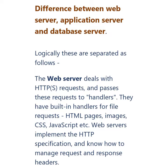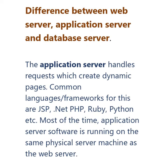Basically, web server deals with HTTP requests, whereas application server is a software which handles the dynamic pages. It can be built using languages or frameworks like JSP, .NET, PHP, Ruby, Python, etc. Most of the time, application server is a software running on the same physical machine as the web server.